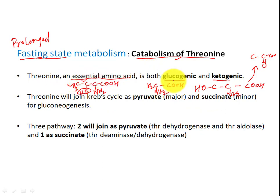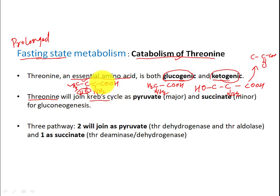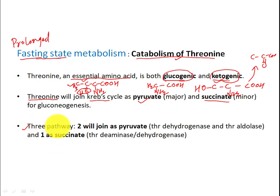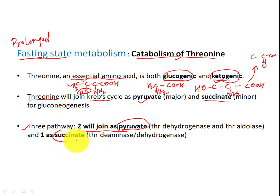Threonine is glucogenic as well as ketogenic. It is very interesting to note that threonine is the only amino acid that joins the Krebs cycle as two different intermediates: pyruvate as well as succinate. No other amino acid has such privilege to join as two intermediates. It also has a ketogenic role, and threonine has three pathways to form pyruvate and succinate.